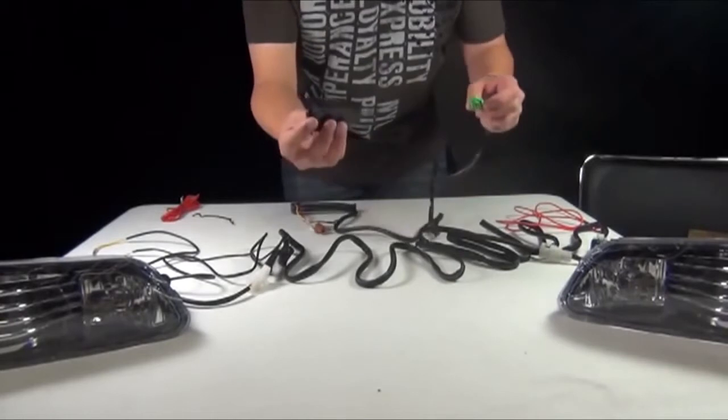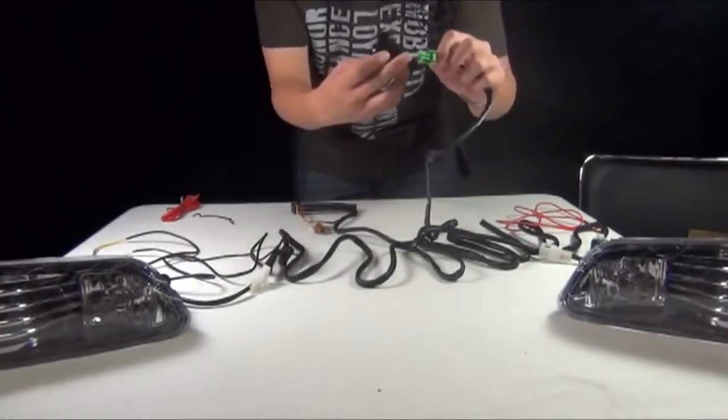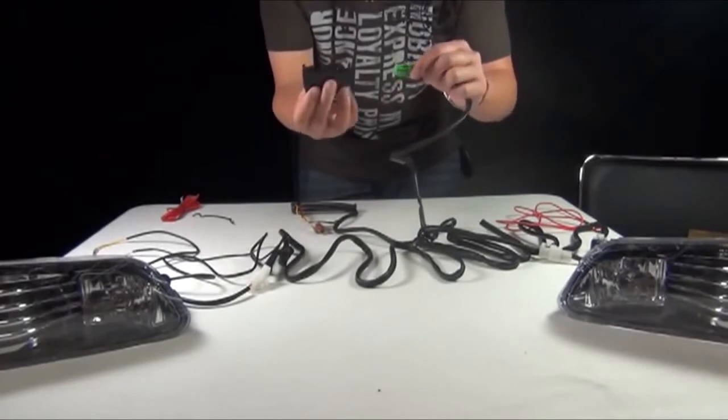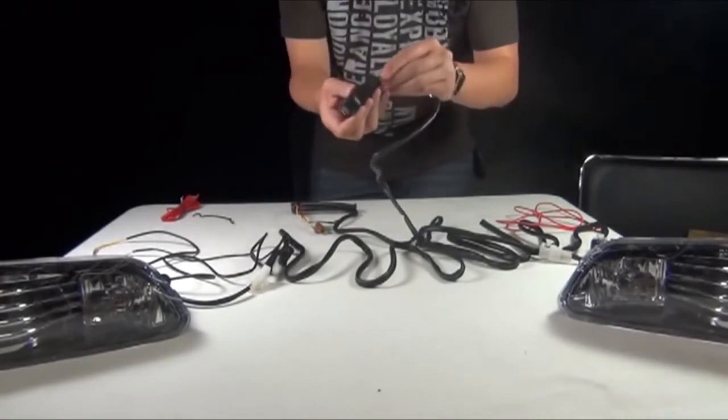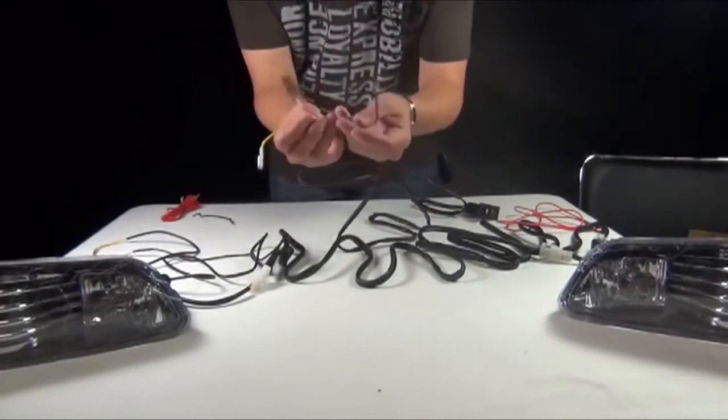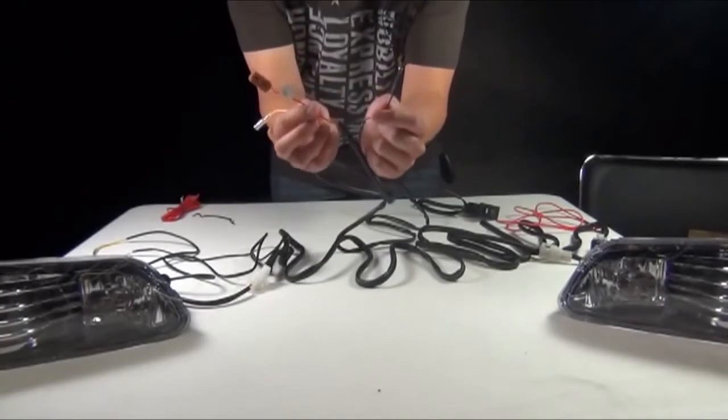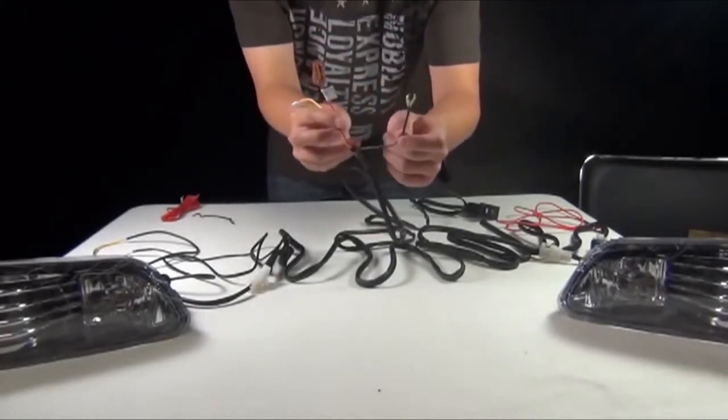After you have done that, you will plug the one with the green adapter into the switch. On the other end, you will have a ground wire again. Ground this to the car frame.